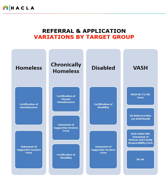Here we'll have the application variations by target group. For homelessness, we'll have the Certification of Homelessness and the Statement of Supportive Services form. For chronically homeless applicants, we'll have the Certification of Chronic Homelessness, the Statement of Supportive Services form, and the Certification of Disability. For disabled applicants, we'll have the Certification of Disability and the Statement of Supportive Services form. For VASH, we'll have the VASH RE-73 Colonel Background Check form, the VA Referral Letter, the HUD-VASH PBV Statement of Family and Veteran Responsibility form, as well as the RE-6A.